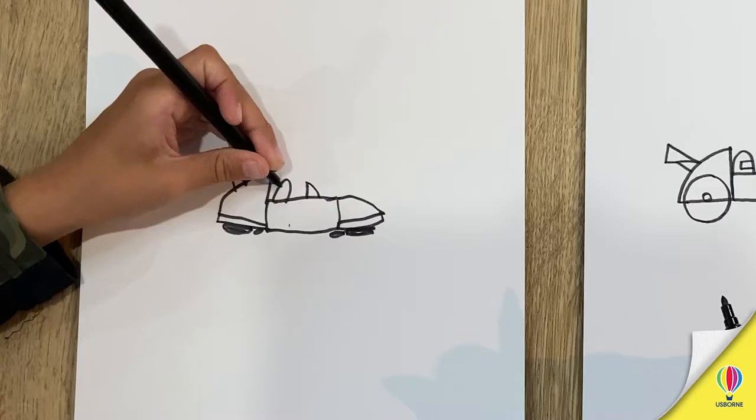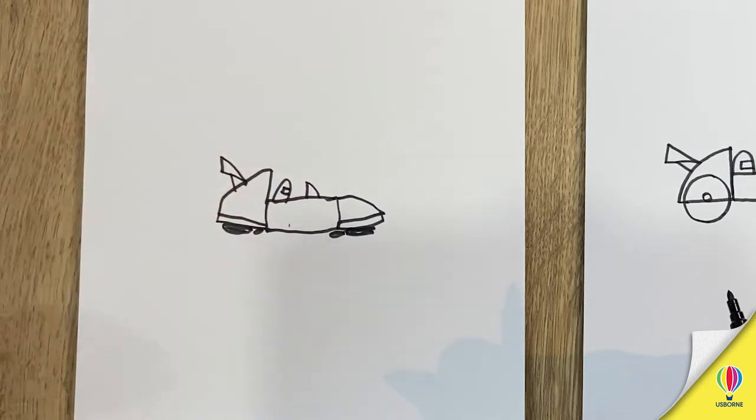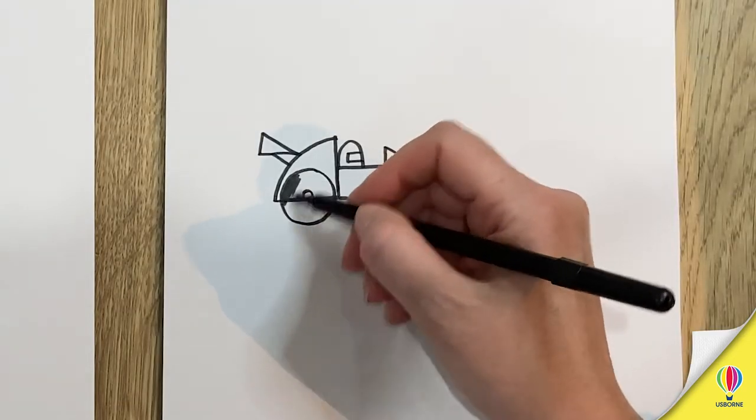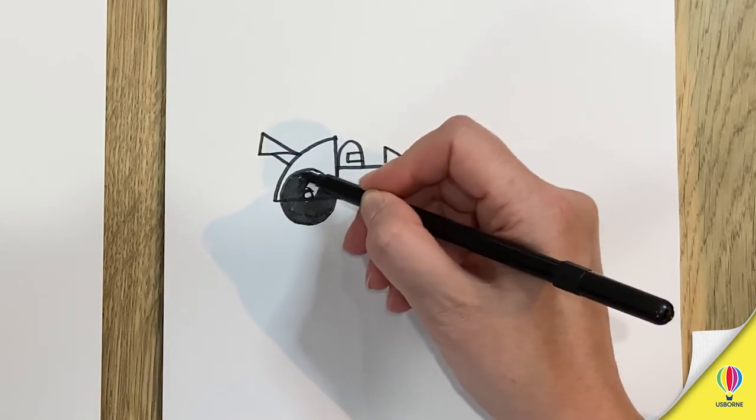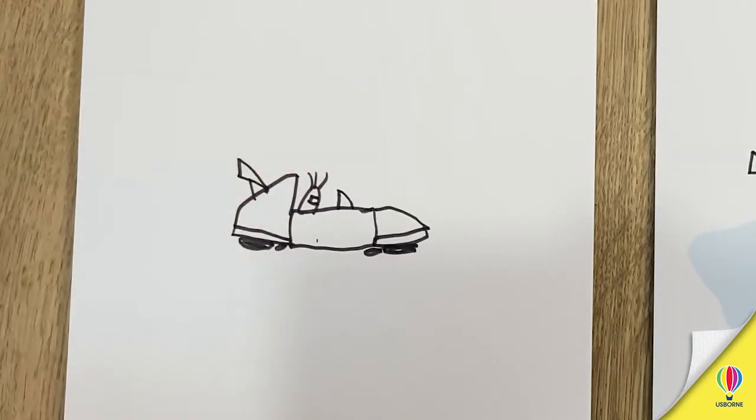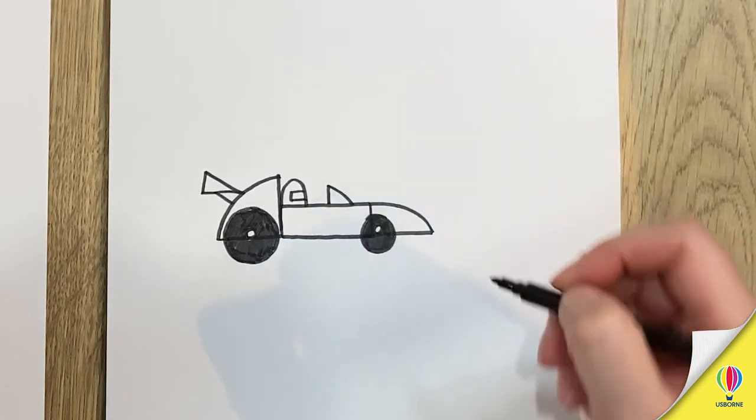So then we're going to draw the visor on the driver. You can draw your visor on yours. Mine's going to have laser eyes. Laser eyes, good good. Okay then we need to color in the wheels so you already colored in your hover wheels haven't you. I'm just going to do something. Gotcha okay. We've got our wheels.